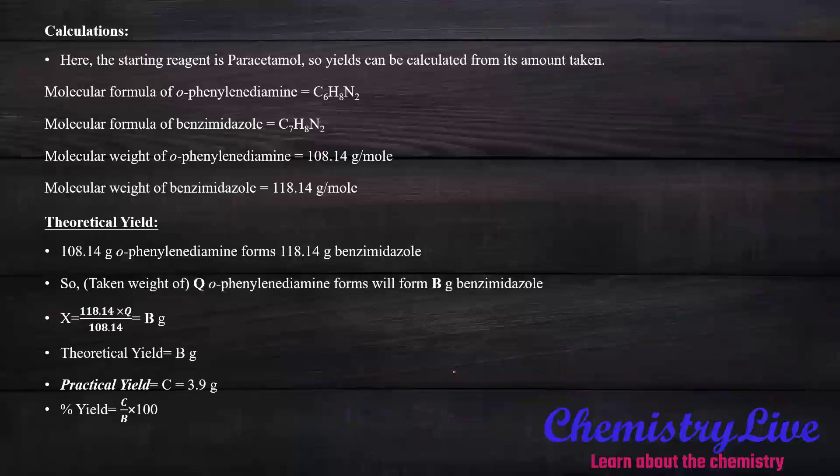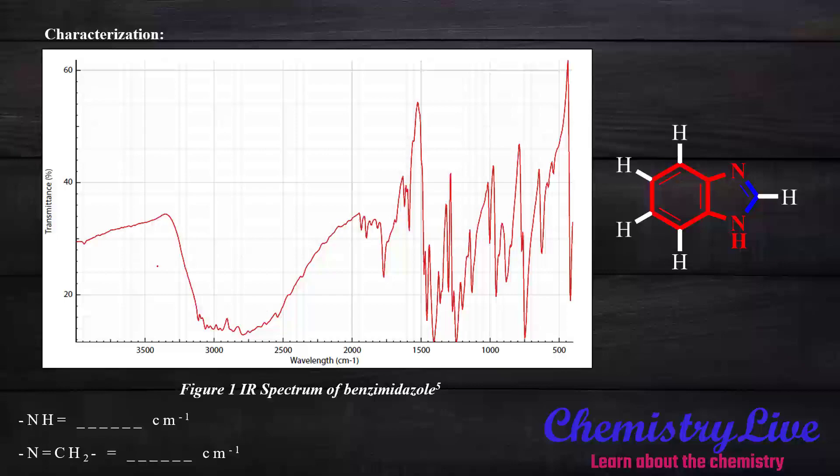Next, the calculations. We have molecular formulas and molecular weights of starting materials and products. If we have 108.14 grams per mole ortho-phenylenediamine, we will get 118.14 grams per mole benzimidazole. So for 5 grams, we do the calculation and get result B. The practical yield is 3.9 grams. To find percentage yield, we do 3.9 divided by B times 100.